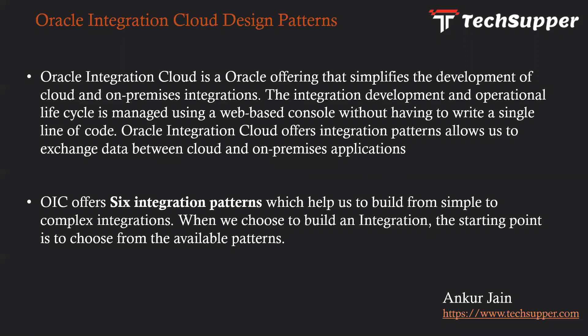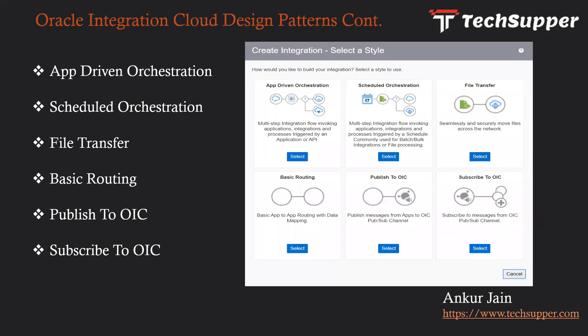OIC offers six integration patterns which help us to build from simple to complex integrations. When we choose to build an integration, the starting point is to select the available pattern. Oracle offers six integration patterns: first is App Driven Orchestration, second is Schedule Orchestration, third is File Transfer, fourth is Basic Routing, fifth is Publish to OIC, and the last one is Subscribe to OIC.